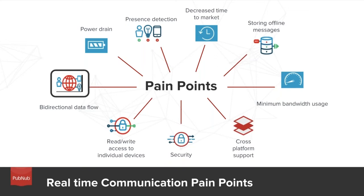The important thing to notice is that data flows in both ways — to and from the things and the end user devices. You want to consume the information, transform it, aggregate it, make sense of it, and also control the devices based on the data received. For instance, you want to control the thermostat based on the values it sends you — is it too hot? Is it too cold? Adjust it accordingly.